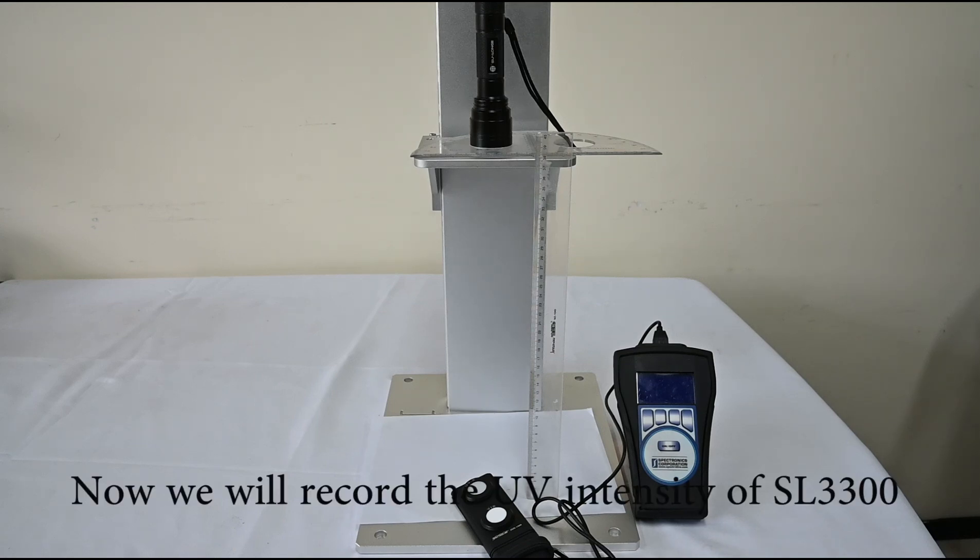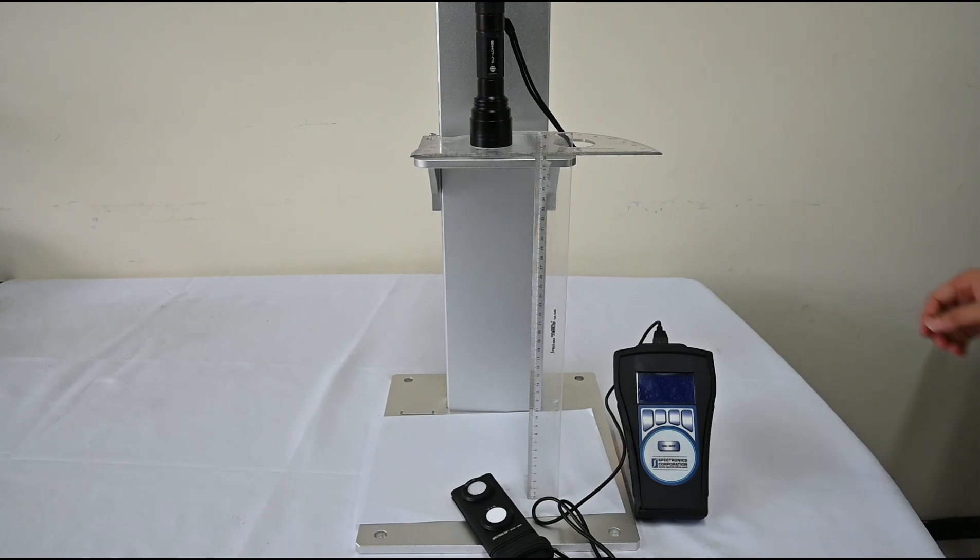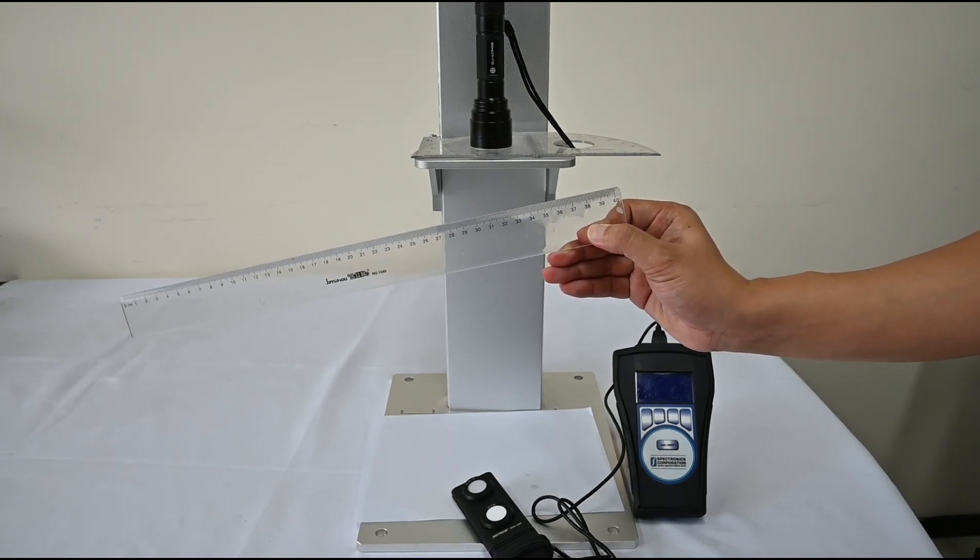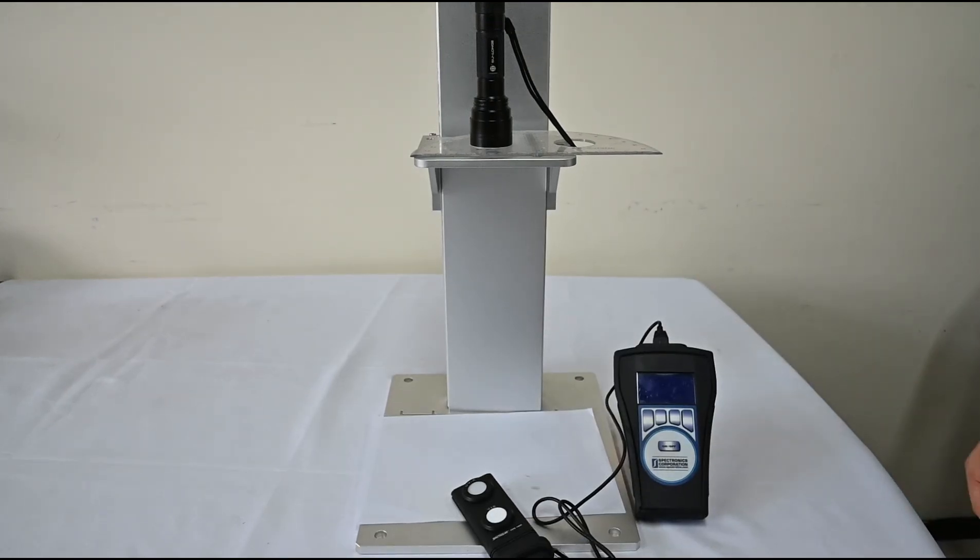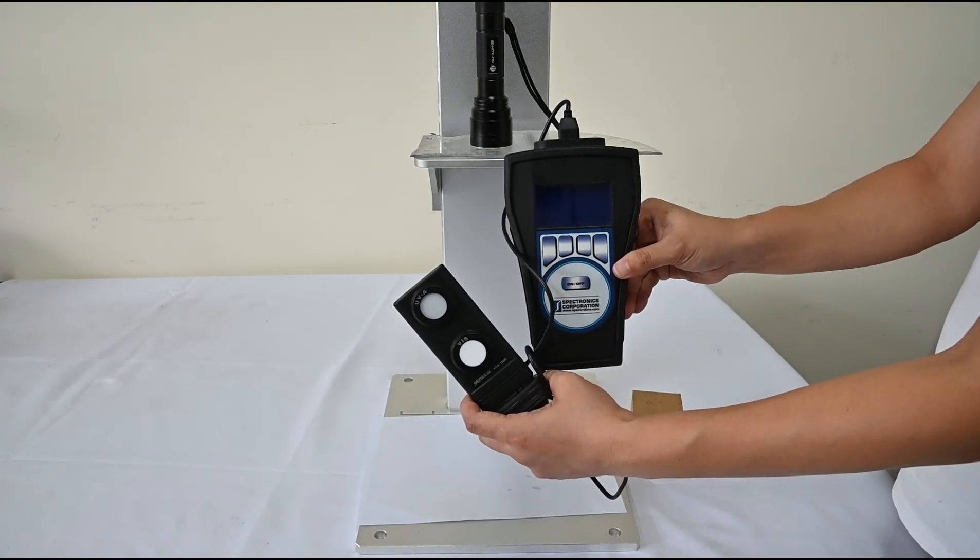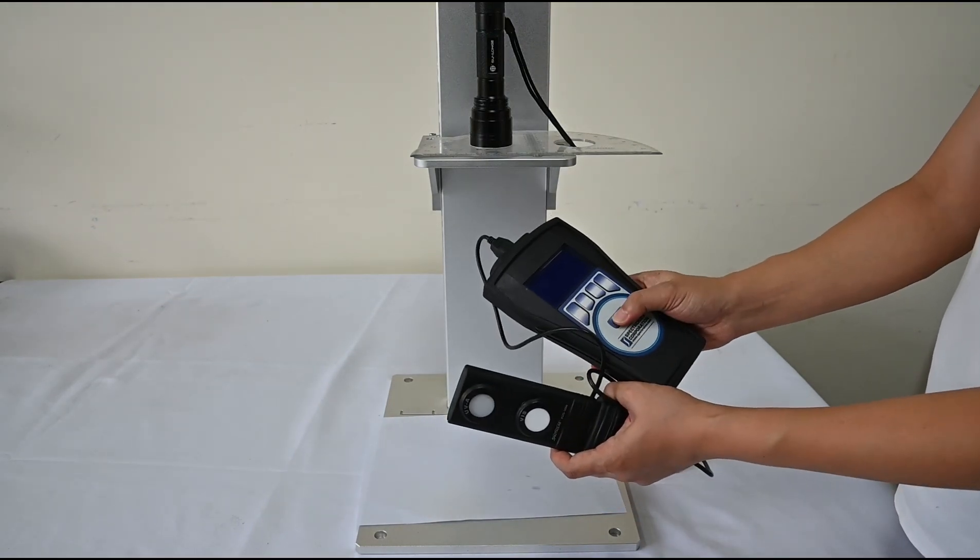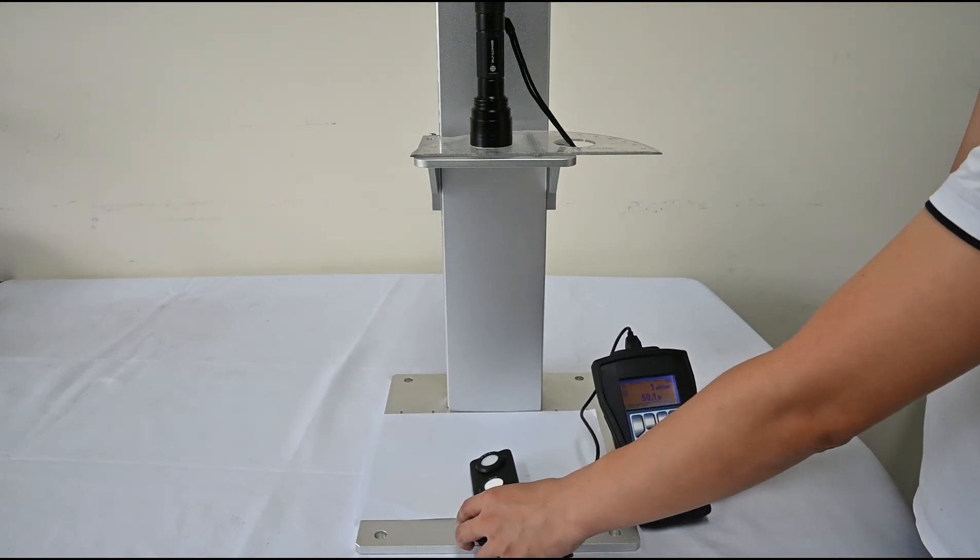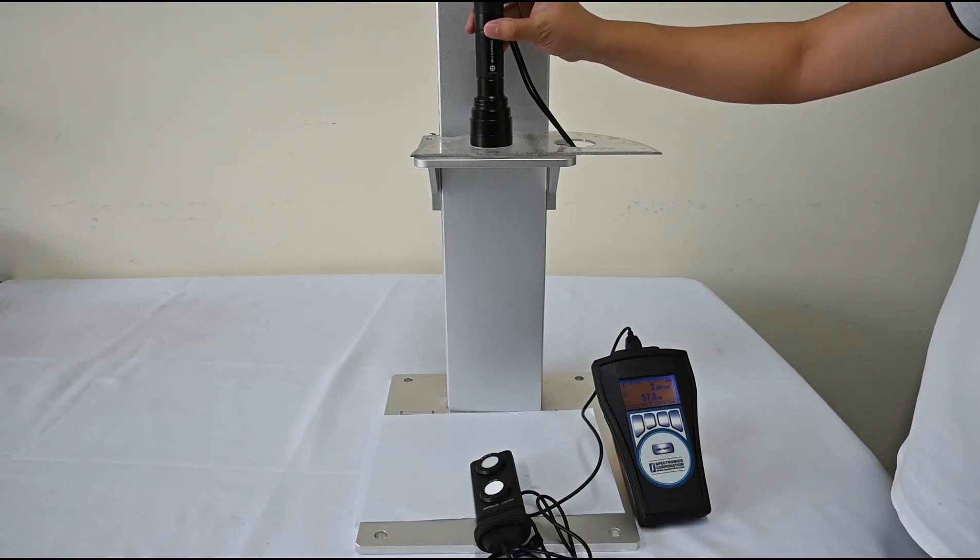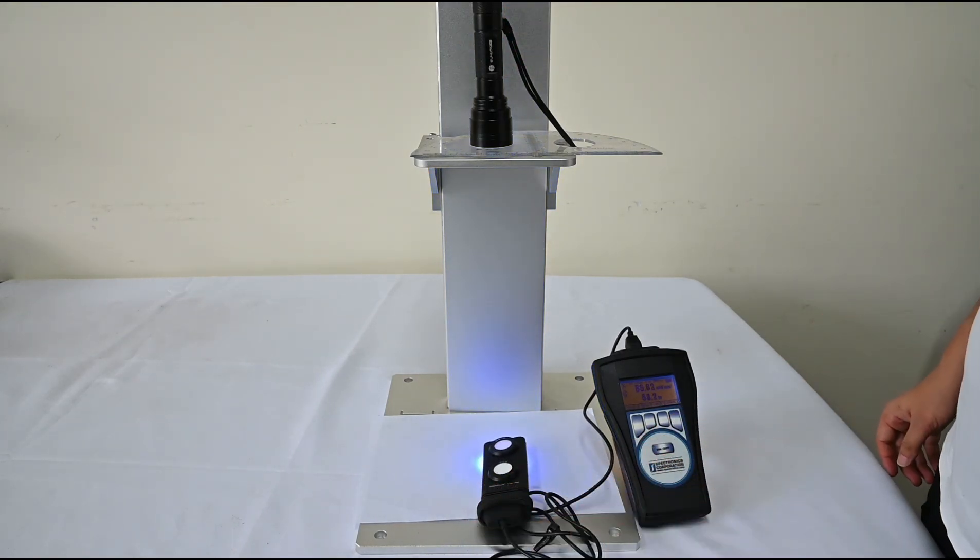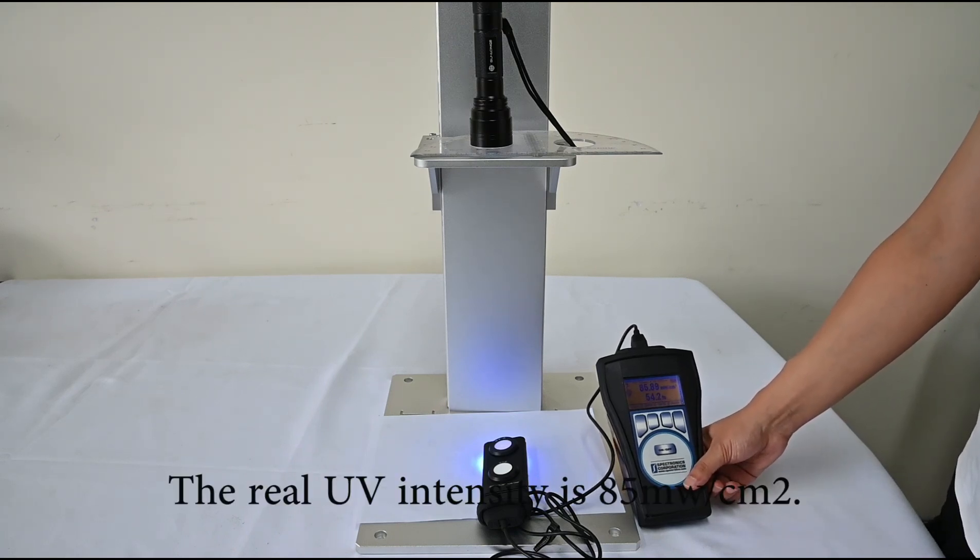And now, we will record UV intensity of SL3600. The test distance is 38 centimeters away. To ensure the accuracy, we use a spectral light meter. OK, here we go. Turn on. You can see that. Now, the real UV intensity is 85 mW per square centimeter.